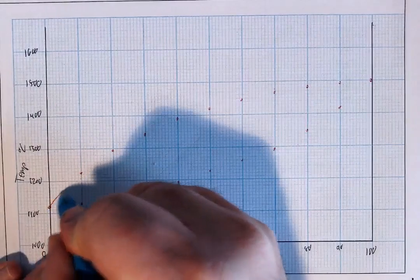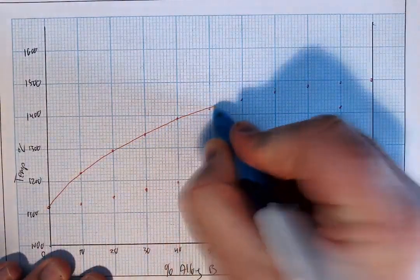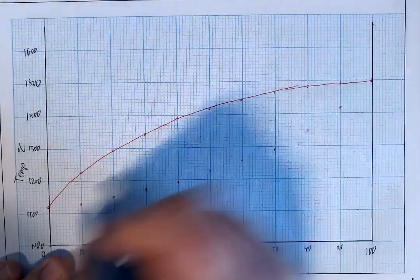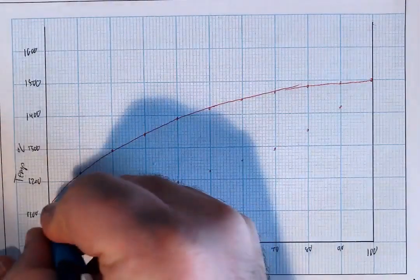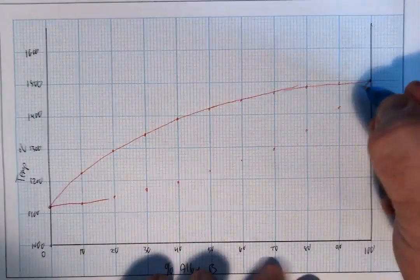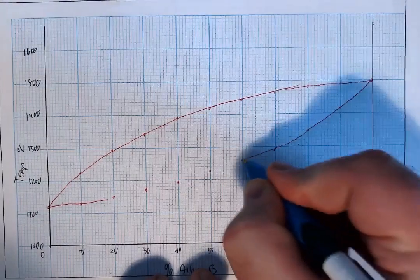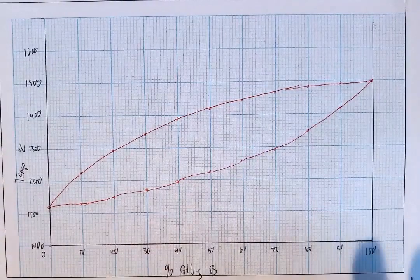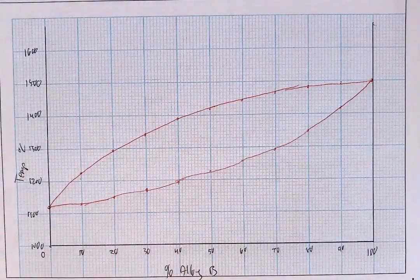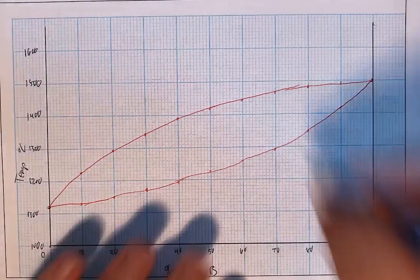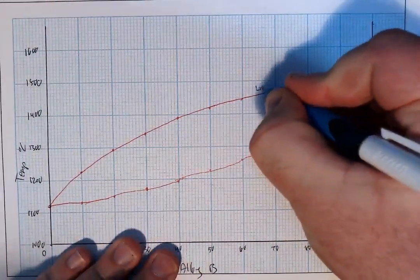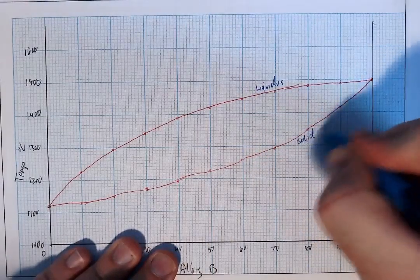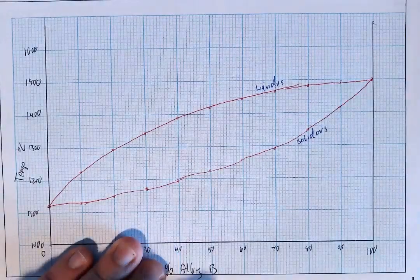Then I'm just going to draw a smooth curve between my points. That is the first part of this question. You're asked to draw the equilibrium diagram according to the given data and then label the two points. So this point up here is your liquidus line.